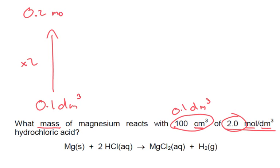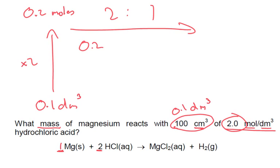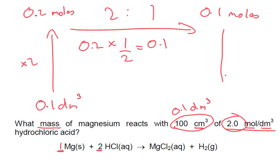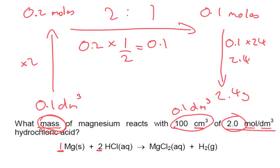We've got 0.2 moles of hydrochloric acid. The ratio of HCl to Mg is 2 to 1. So we do 0.2 times by 1/2, which gives us 0.1 moles of magnesium. Then we're looking for mass, so we multiply the moles by the molar mass of magnesium. We've got 0.1 moles, and magnesium is 24 on the periodic table. So 0.1 times 24 is 2.4 — giving us a final answer of 2.4 grams of magnesium.